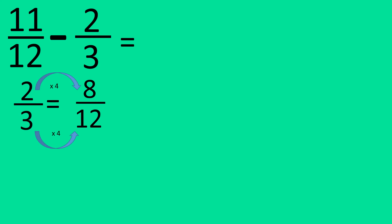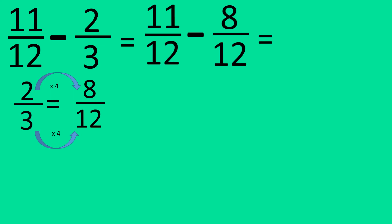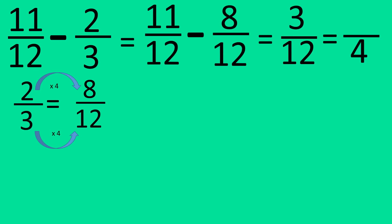So let's write down this question again: eleven over twelve minus eight over twelve. The denominator will stay the same, and when you take away eight from eleven, you get three. This can be simplified down. The denominator will be four because when you divide twelve by three, you get four. And when you divide three by three, you get one. One quarter is the answer.